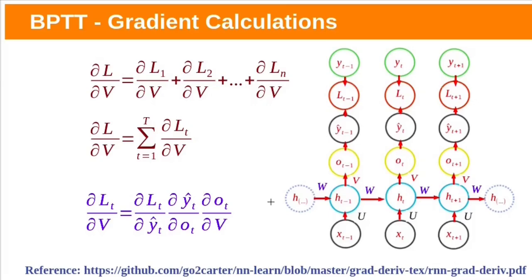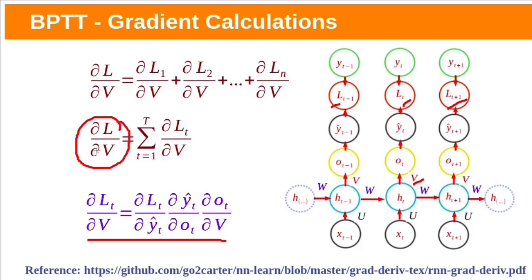Let us see the gradients with respect to each parameter. First, start with v. We know the total gradient with respect to v is the summation of losses at each time step with respect to v. Let us consider at one time step t. This v is not directly connected to the loss at time step t, so we need to use the chain rule. The loss at time step t depends on ŷt, ŷt depends on ot, and ot depends on v. So the gradient at time step t with respect to v will be (∂Lt/∂ŷt)(∂ŷt/∂ot)(∂ot/∂v). We calculate this for each time step and sum them all to get the total derivative with respect to v. In this case, calculating this gradient is easy because we do not have any recurrence here.